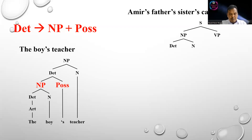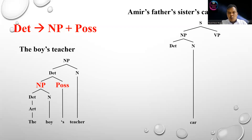As I told you before, whenever you want to analyze the structure of NP-POS, you have to determine the core of the phrase. Here, the core of the phrase is 'car.' We label the main constituent of the NP, which is 'car.'